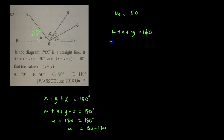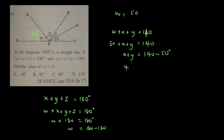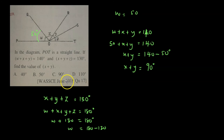So 50 plus X plus Y must equal 140 degrees. Hence X plus Y equals 140 minus 50 degrees, which gives us X plus Y equal to 90 degrees. Therefore the solution is possible answer C. You can pause the video and go over what we've done to clarify any doubts.